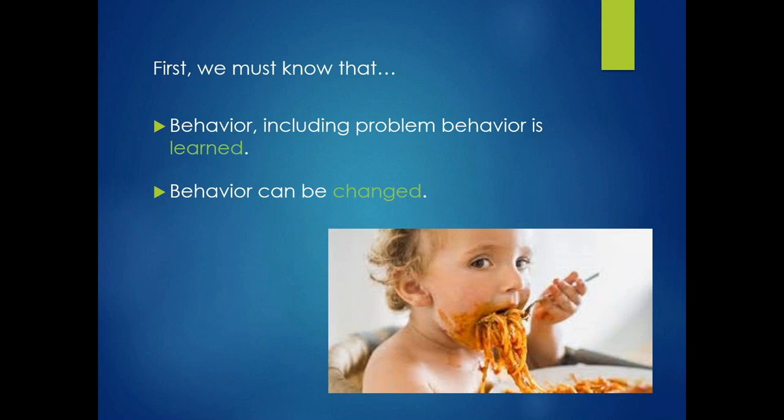I'll start with something that may sound novel to some of you and commonplace for others. This is an underlying and important message for today's content, and all else builds on these assumptions. That behavior, including problem behavior, is learned. And that behavior can be changed. We also know that about 64% of children with autism routinely engage in at least one form of problem behavior, considering meltdown, self-injury, and aggression. And that 32% of children with autism engage in all three of these behaviors.